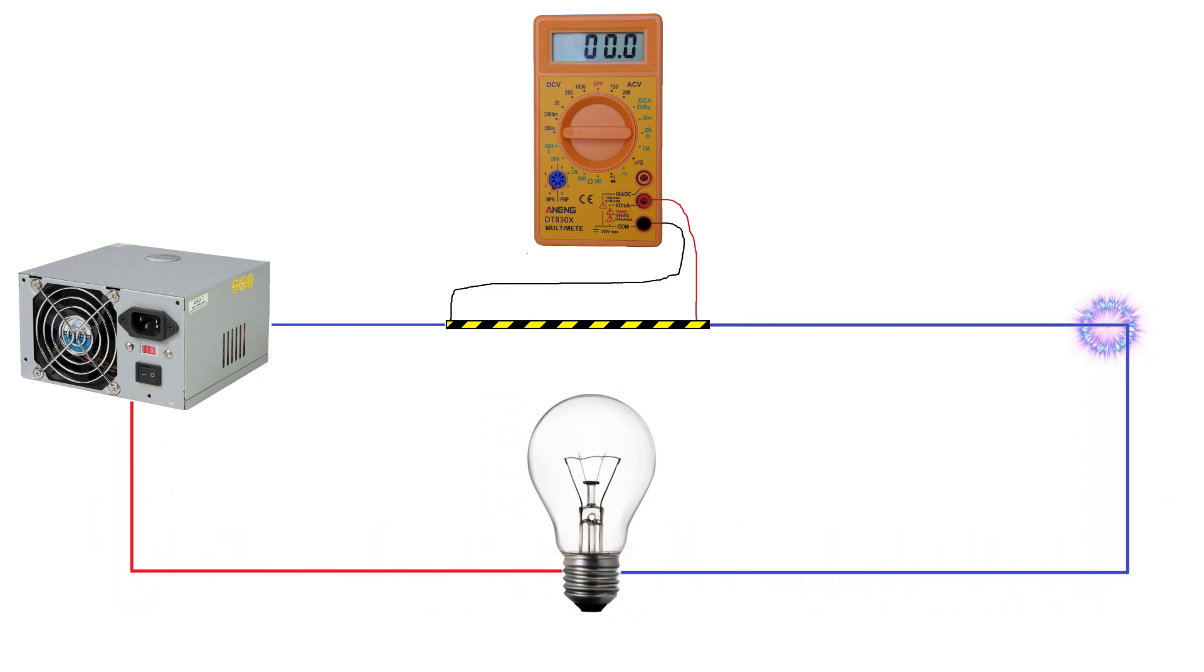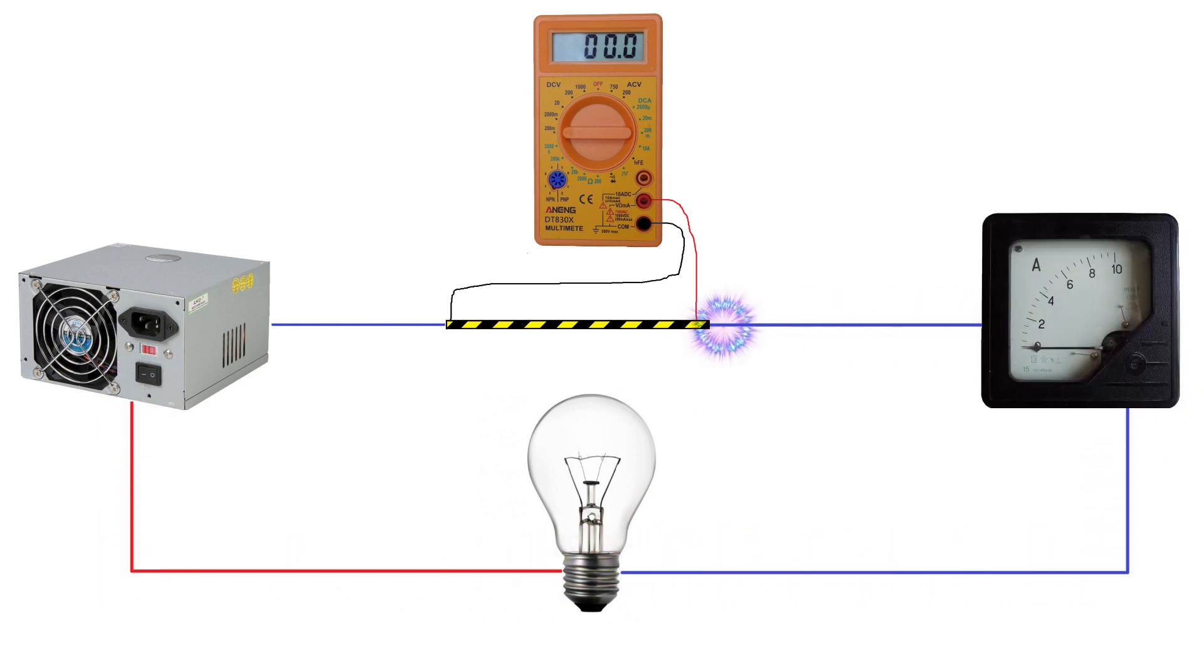Before the multimeter will show accurate measurements, it must be calibrated. We will do this using a reference ammeter. It should be with the maximum possible measurement range. Connect it in series with the wire and the bulb. The theory is understood. Now I'll show you how it all looks in practice.